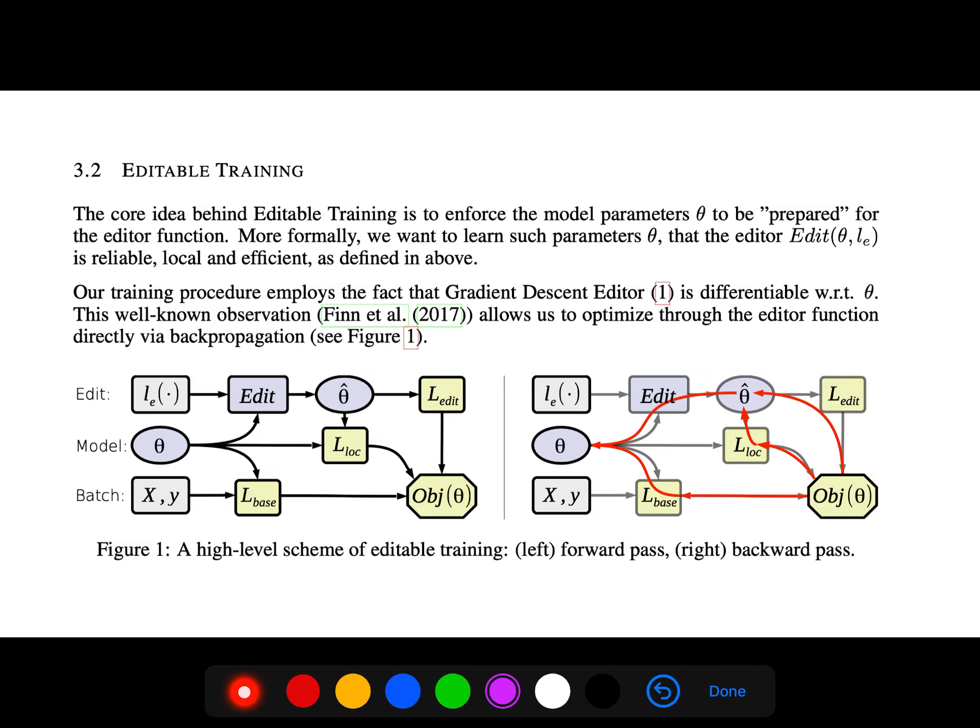The core idea behind editable training is to enforce the model parameters to be prepared for the editor function. More formally, we want to learn such parameters that the editor is reliable, local, and efficient. Our training procedure employs the fact that gradient descent editor is differentiable with respect to theta. This well-known observation allows us to optimize through the editor function directly via backpropagation.